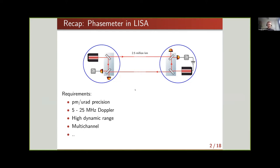Due to the Doppler shift between spacecraft, we have a heterodyne beatnote between 5 and 25 MHz. Taking into account the offset phase due to the huge arm length difference in the interferometer, we basically see all the laser frequency noise up to a factor of two. So in the phase meter we need high dynamic range, because laser frequency noise is only removed in post-processing in TDI. The phase meter needs to capture this very noisy data but still with very high precision.